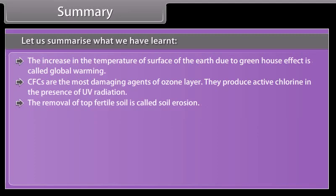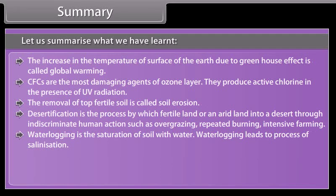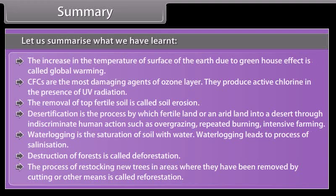The removal of top fertile soil is called soil erosion. Desertification is the process by which fertile land is turned into desert through indiscriminate human actions such as overgrazing, repeated burning, and intensive farming. Waterlogging is the saturation of soil with water and leads to salinization. Destruction of forests is called deforestation. The process of restocking new trees in areas where they have been removed is called reforestation.